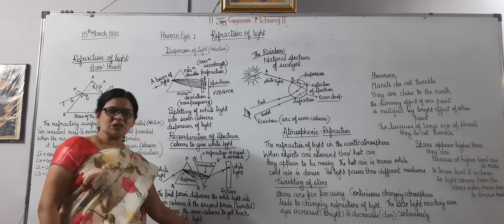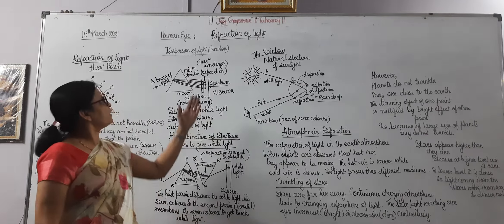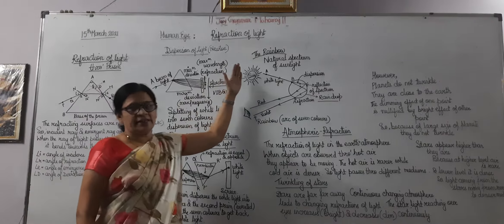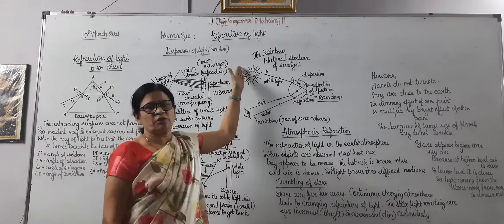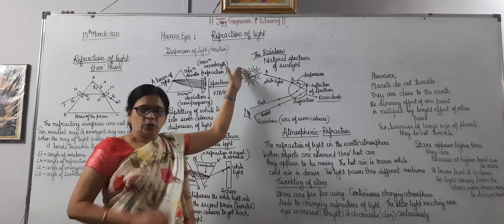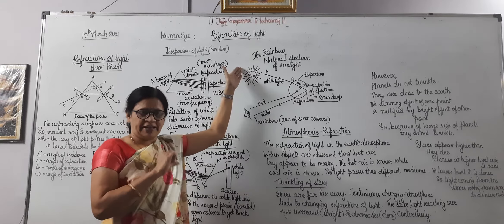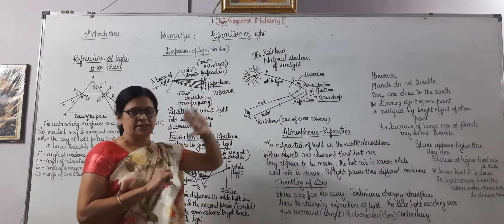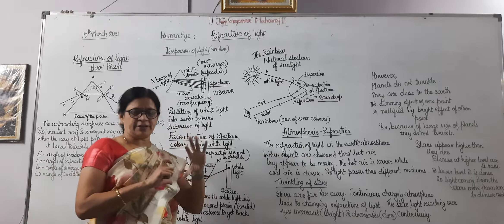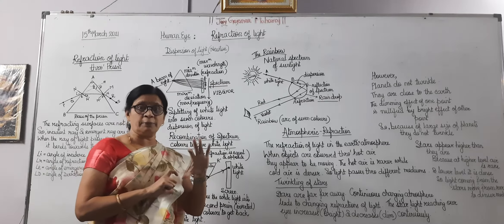We start with the next part of the human eye, that is the refraction of light. Today we are going to consider refraction of light, considering the refraction of light through a prism.